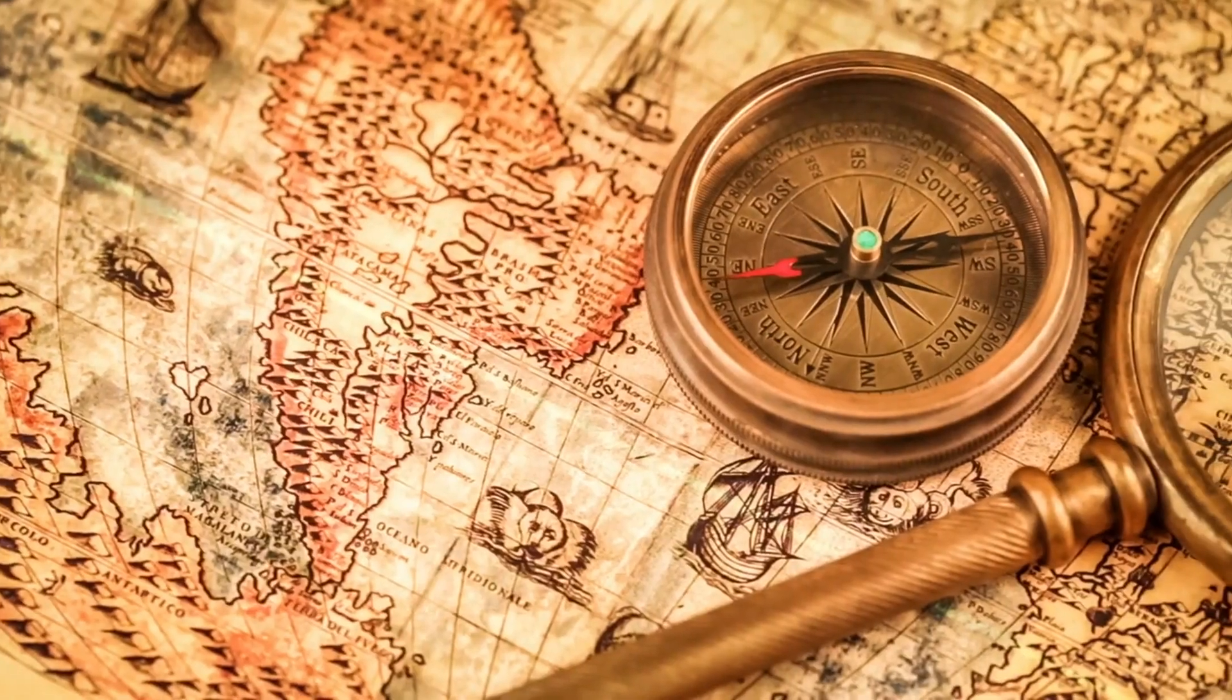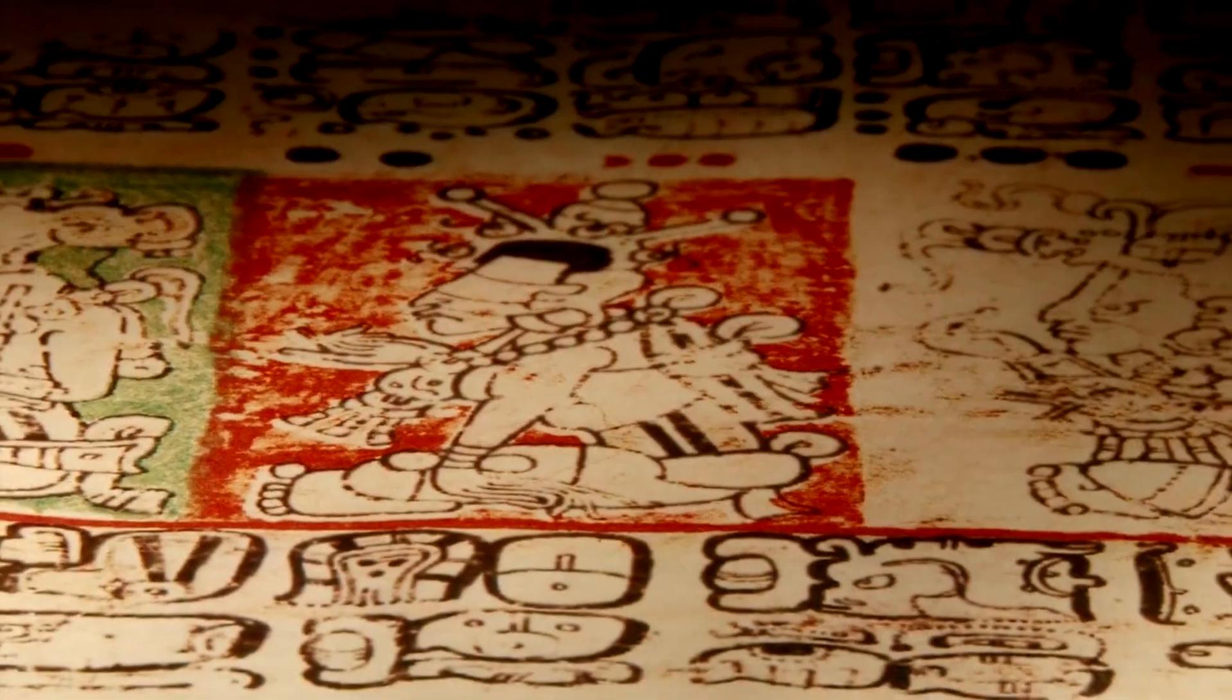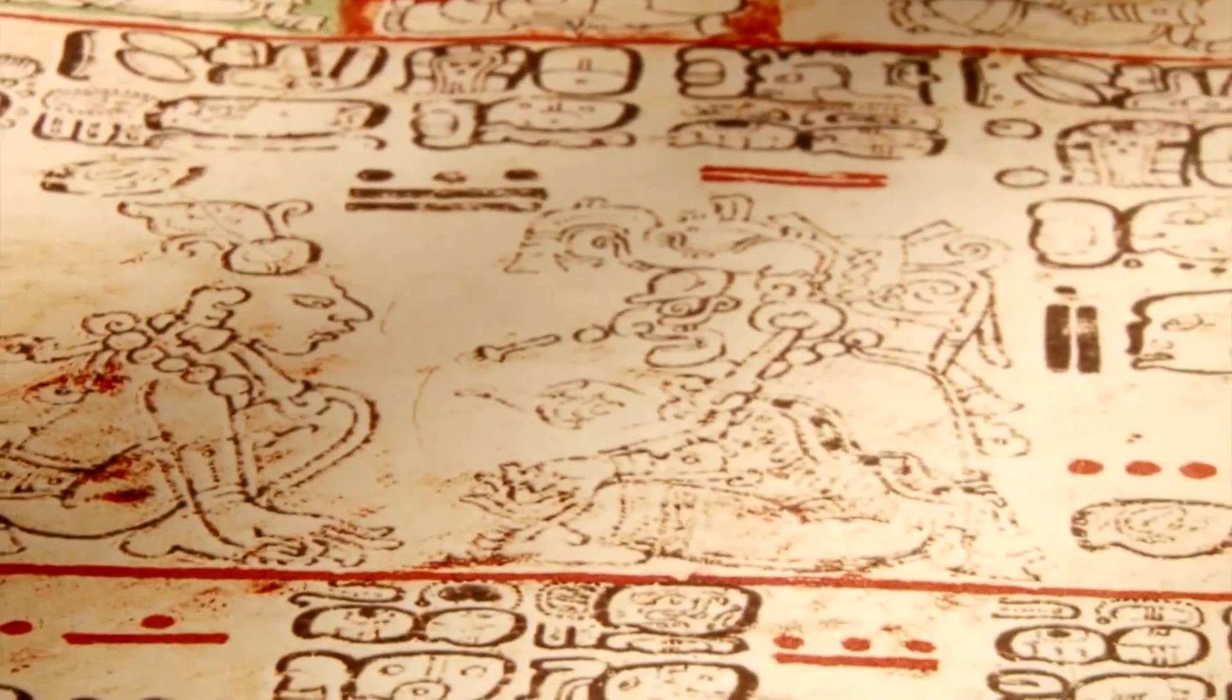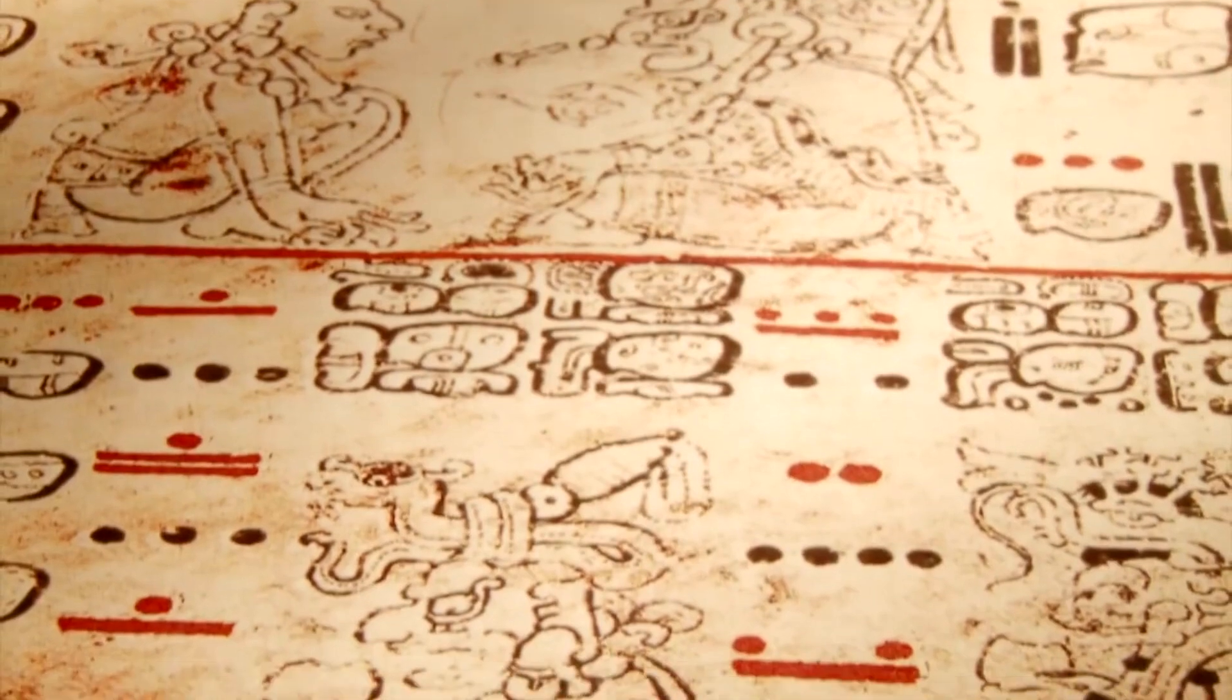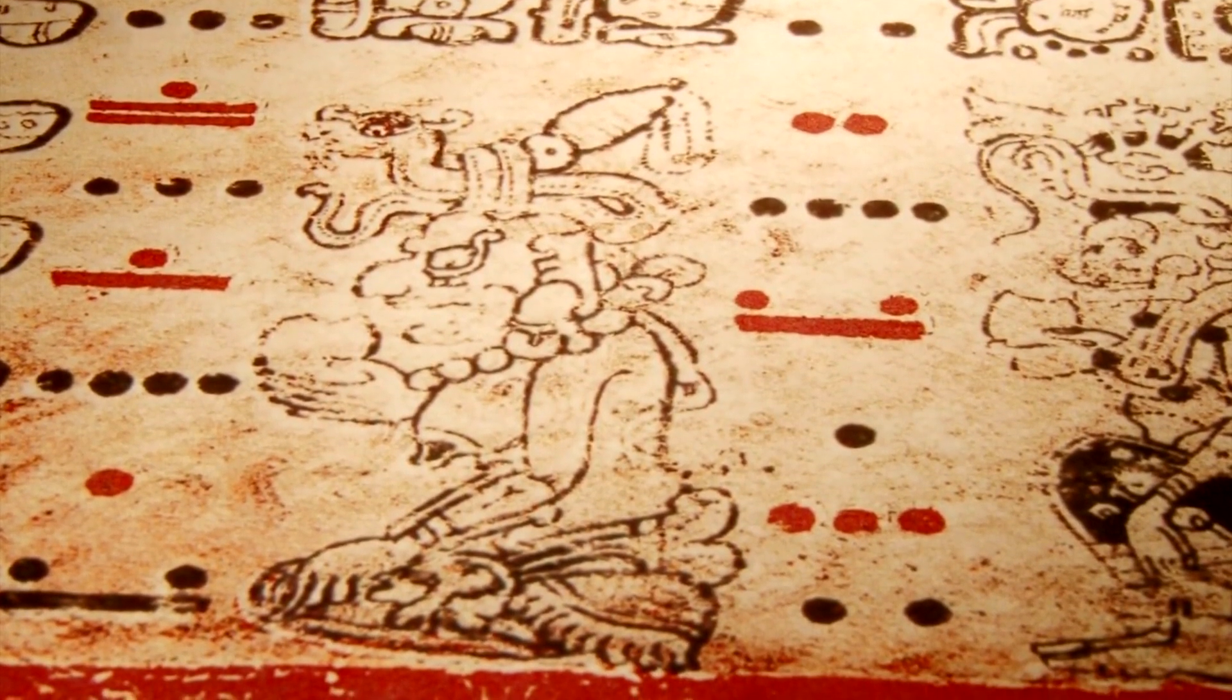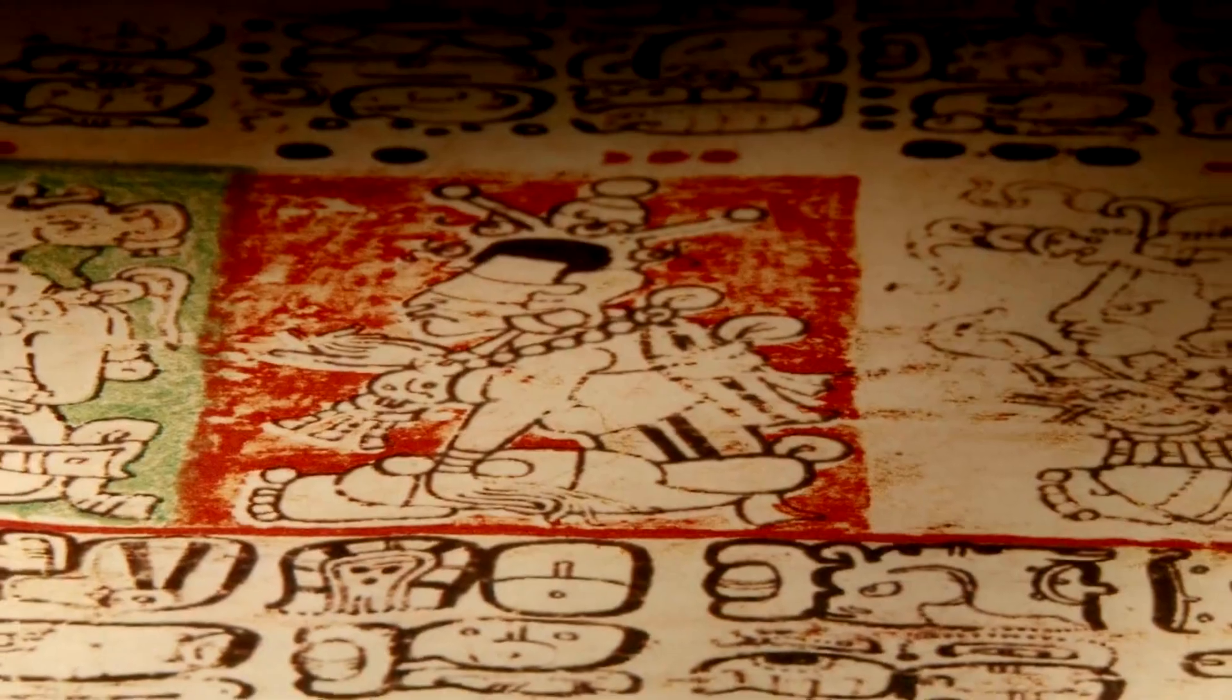History speaks: ancient numerology and Scorpio. Going back in time, ancient civilizations like the Egyptians, Babylonians, and Greeks revered the power of numbers. They believed that numbers held the secret to the universe. Scorpios, being one of the oldest zodiac signs, had their fair share of attention.